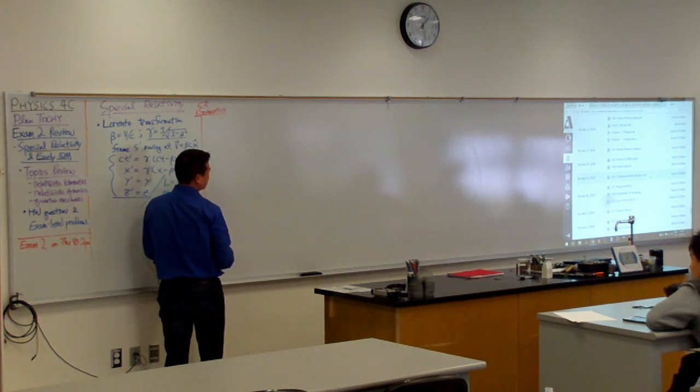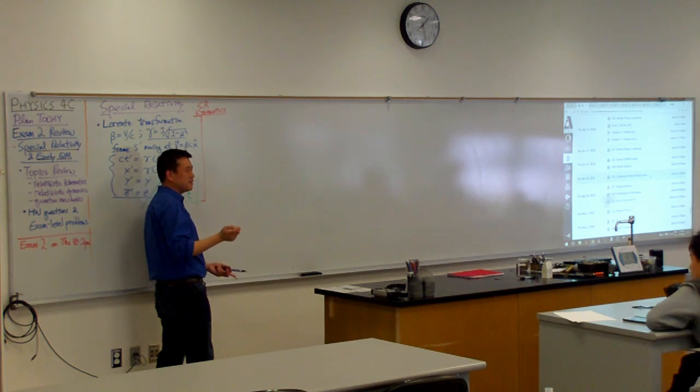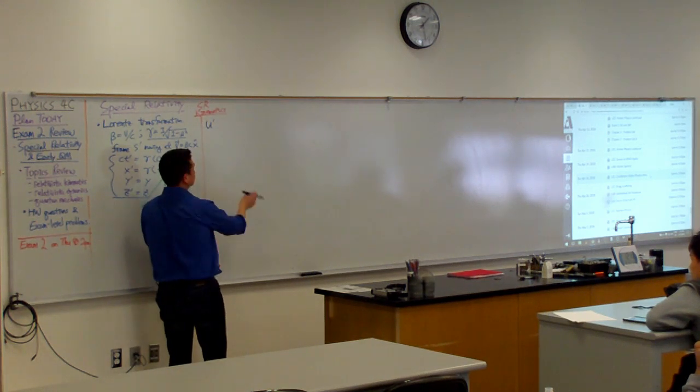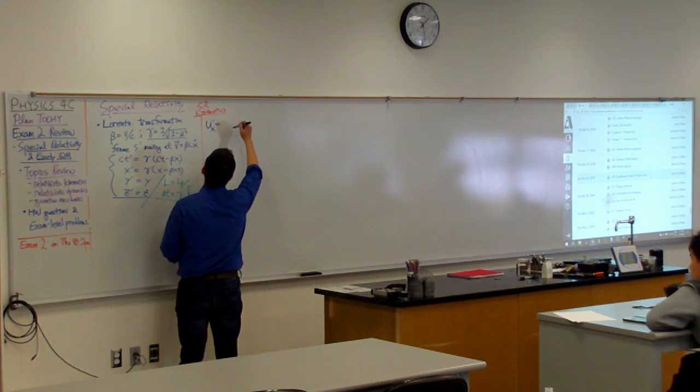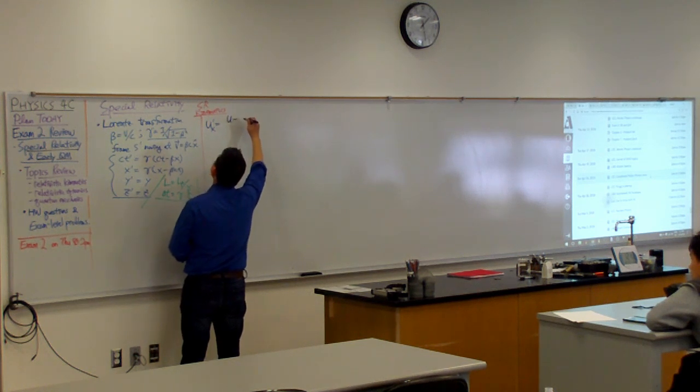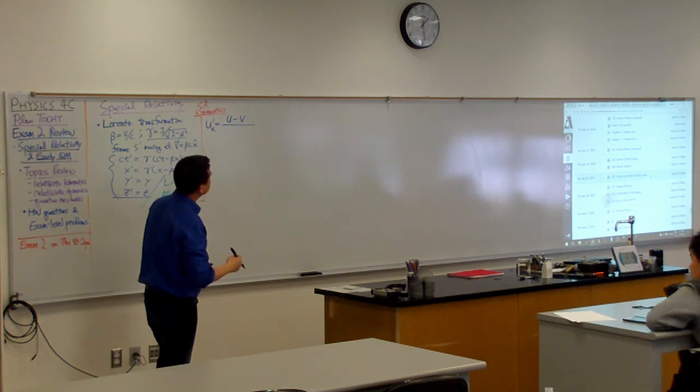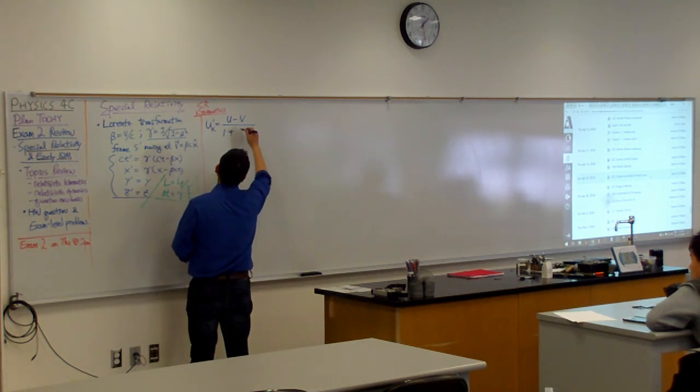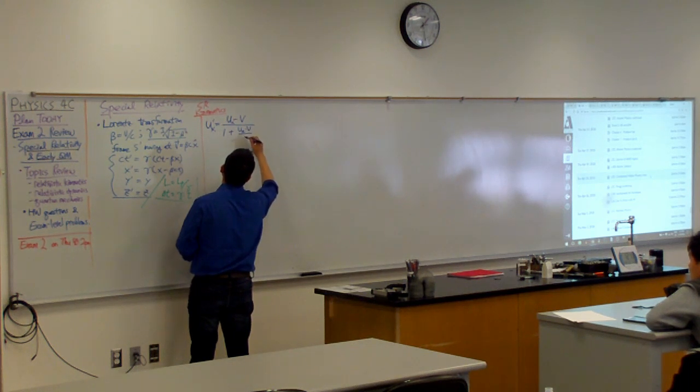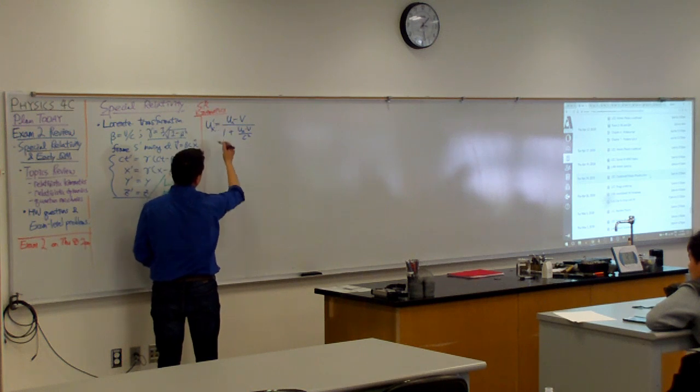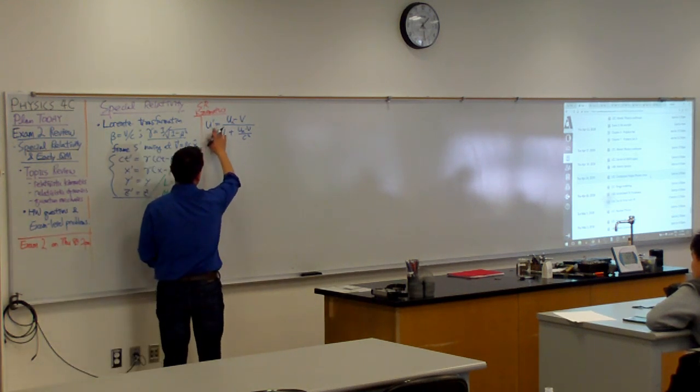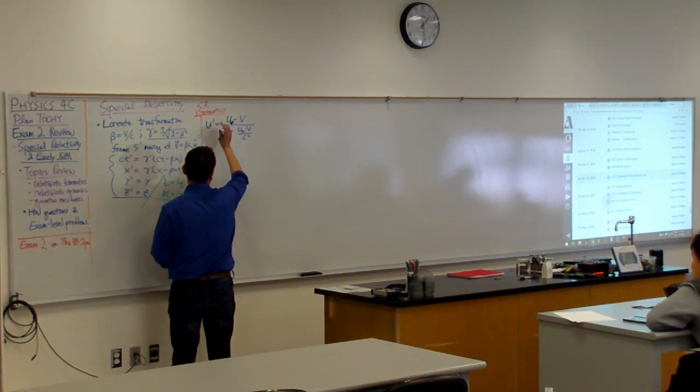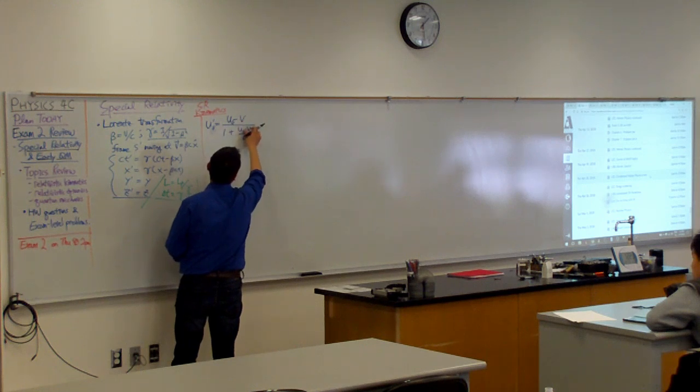Does your textbook use U to represent the velocity of the object? So, U prime, velocity of some object in the frame S prime along the X direction is, let me try to remember this. I guess it should be U minus V divided by one plus U_X times V divided by C squared. Or, I think your textbook might say U parallel along the direction of the relative velocity between the frames. So, let me actually do it this way: parallel.